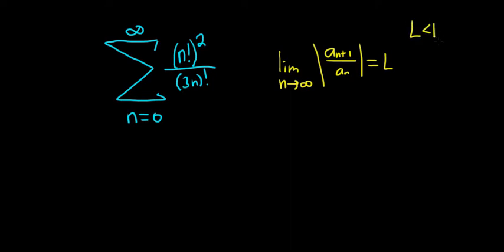If l is less than 1, we have convergence. If l is bigger than 1, we have divergence. And if l is equal to 1, we have, unfortunately, no information.